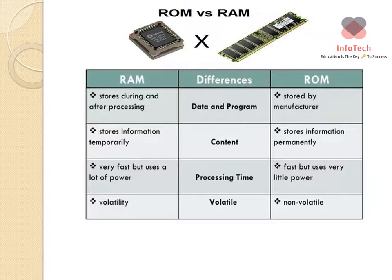Now let us examine some differences between RAM and ROM. RAM stores programs during and after processing, while ROM stores programs as set by the manufacturer. Regarding content, RAM stores information temporarily whereas ROM stores information permanently. Regarding processing time, RAM is very fast but uses a lot of power, while ROM is also fast but uses very little power.